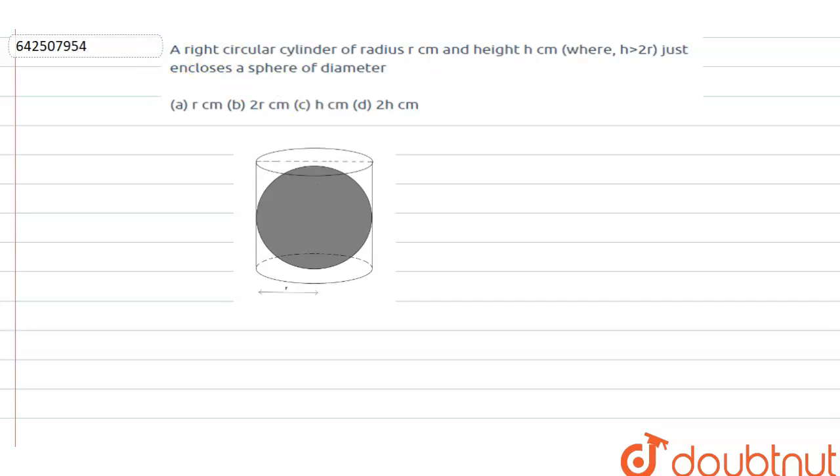A right circular cylinder of radius r centimeter and height h centimeter, where h is greater than 2r, just encloses a sphere of diameter...